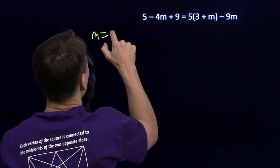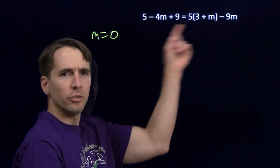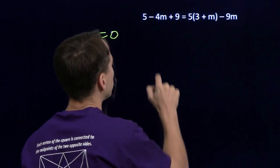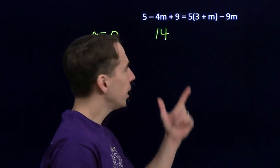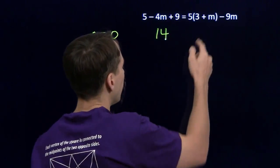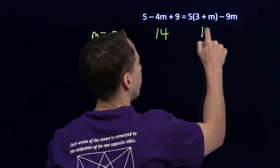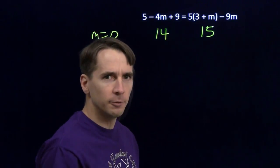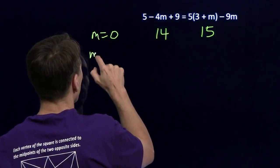So let's try m equals 0. If I put m equals 0 in both sides of this, what happens? Well, that just goes away and leaves 14 on the left. And on the right, that'll be 3. 5 times 3 is 15, minus 0, that's still 15, and we already know that 14 and 15 aren't equal. m equals 0 doesn't work.